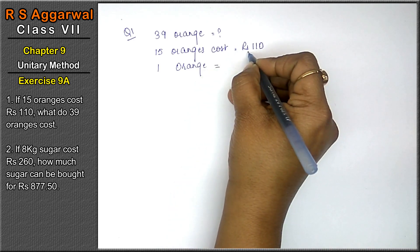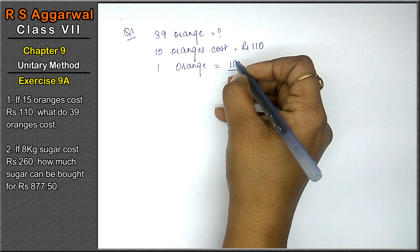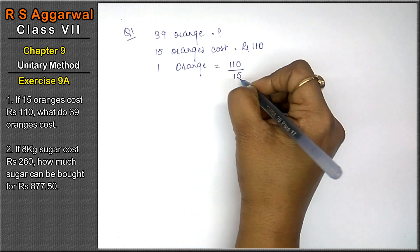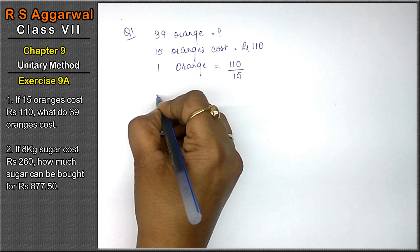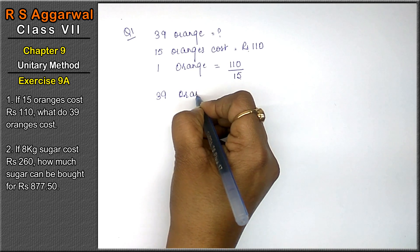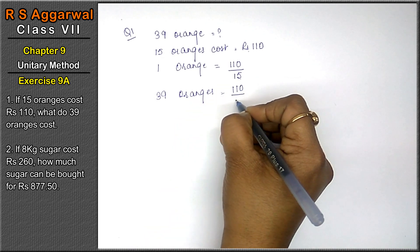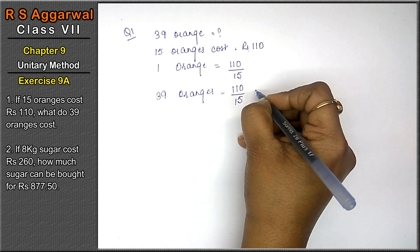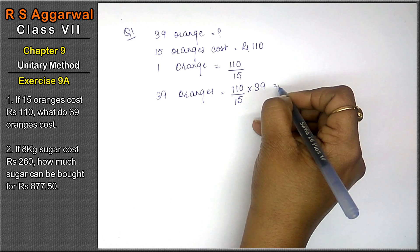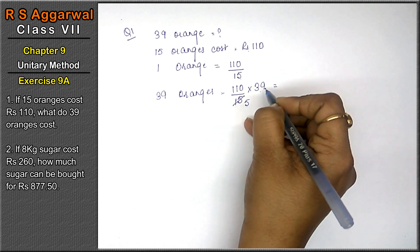The cost of one orange — we will divide rupees 110 by 15, the number of oranges, to get the cost of one orange. Then, what will be the cost of 39 oranges? Cost of 39 oranges equals cost of one orange multiplied by 39.